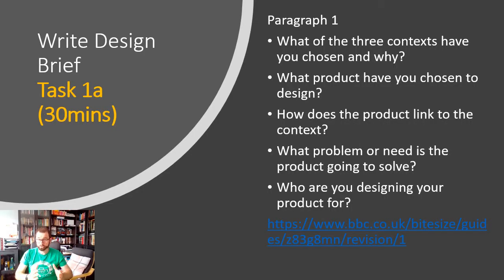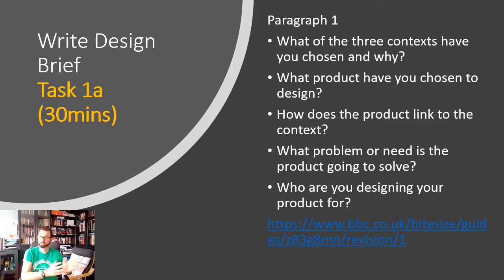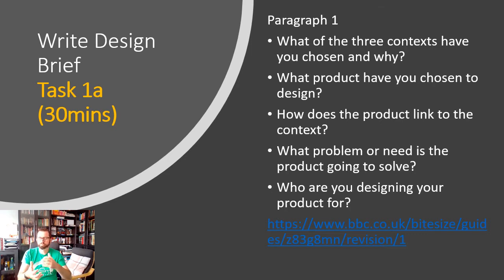The task is split into two parts, each half an hour. Task 1a is the first part and we're going to really link it to the context. In paragraph one: what of the three contexts have you chosen and why? You did this as a conclusion very early on, so you can go back and use some of that text. What product have you chosen to design and why have you chosen that product? How does the product link to the context — how do they marry up?